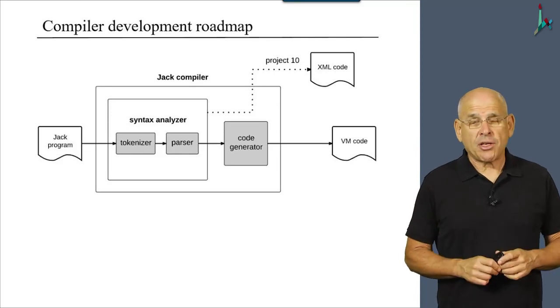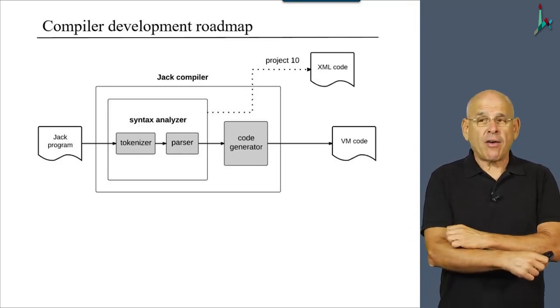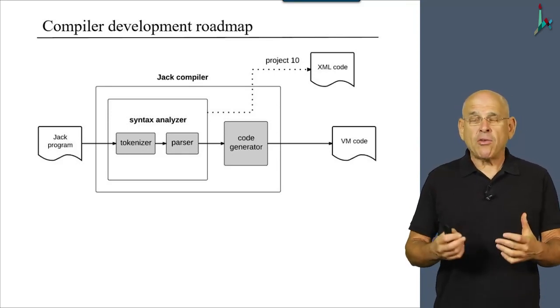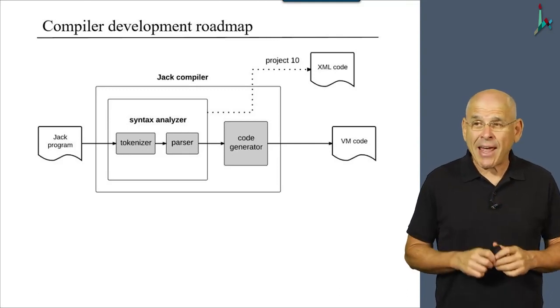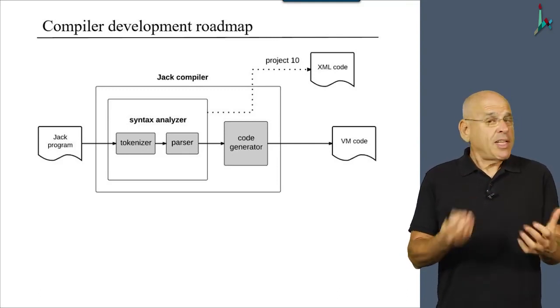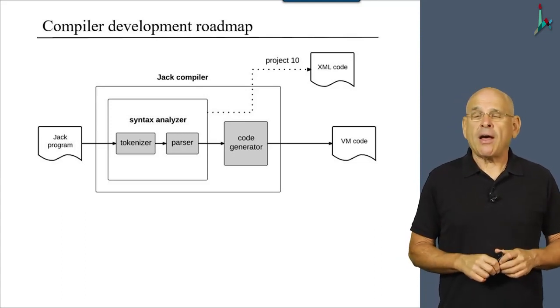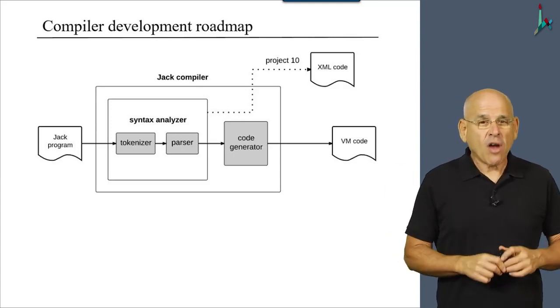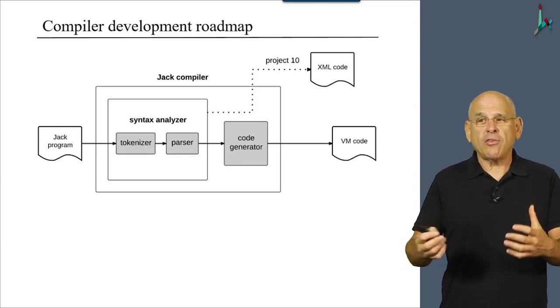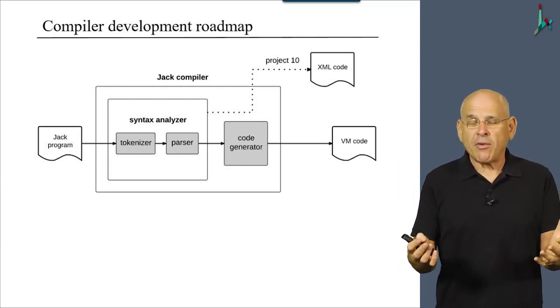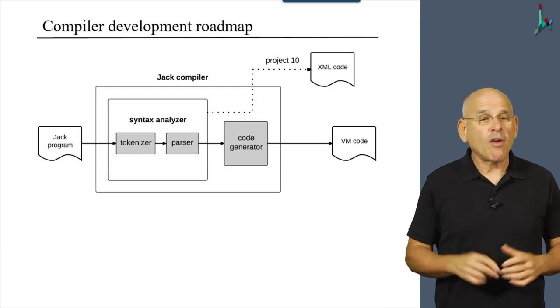So here's the overall architecture and roadmap of our compiler. To remind you, in the previous project, in project 10, we wrote a syntax analyzer that generates XML code. Now, we have to take this software and morph it into a program that generates VM code.